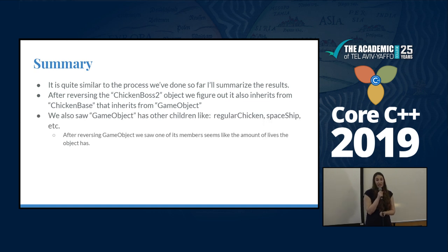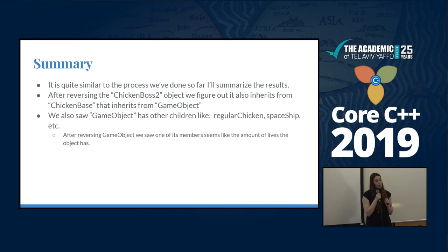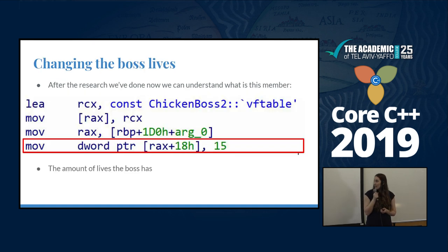We also looked at game object again to see who else inherits from it, and realized there is more than one — there is also chicken base, regular chickens, and space sheep. It's a general object of the game. After reversing the constructor, we could find that one of the members is the number of lives the object has, which is quite useful for our goal — now we know what to change.